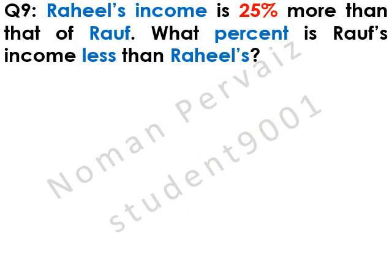Question number 9 is: Raheel's income is 25% more than that of Raouf. What percent is Raouf's income less than Raheel's? Let's see its solution.